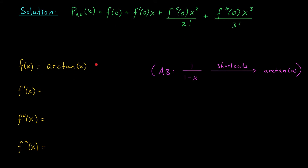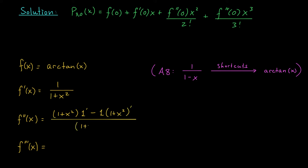My function is f of x equals arctan x. Its first derivative is 1 over 1 plus x squared. For the second derivative, I use the quotient rule: low d high minus high d low. That gives 1 plus x squared times the derivative of 1, minus 1 times the derivative of 1 plus x squared, all over the square of the bottom. The derivative of 1 is 0, leaving minus 2x over (1 plus x squared) squared.